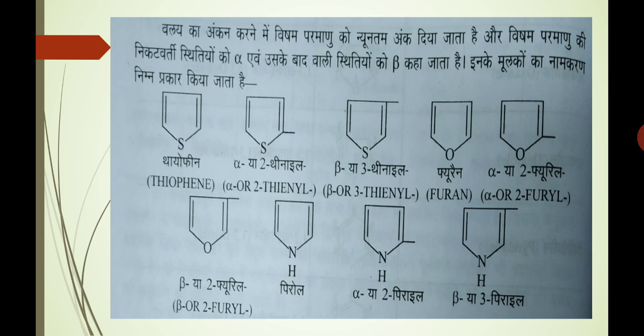Ab ring ki numbering karne mein hetero atom ko humne ek number diya, aur hetero atom ki nikat varti ya jo adjacent position hai, unko alpha, aur uske paas wali isthiti ko humne beta naam karan kiya. Yadi hum ismein se ek hydrogen atom ko nikaal dein, to phir humko jo radical milega uska naamkaran hum kaise karenge. Yadi vo thiophene hai, to thiophene se banne wala radical kya kahlayega — thienyl ya 2-thienyl.